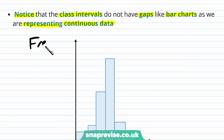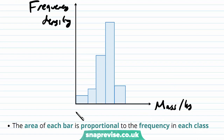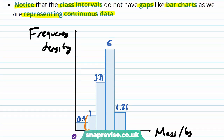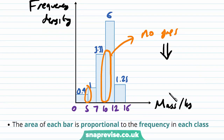So here we have our frequency density plotted against the mass in kilograms, with mass values of 0, 5, 7, 10, 12 and 16, and bar heights of 0.4, 1, 3.33, 6 and 1.25. Notice that between each of the bars there are no gaps, because our mass is continuous data.